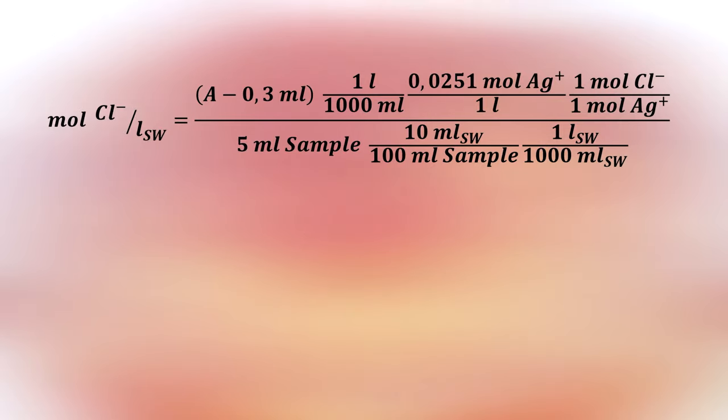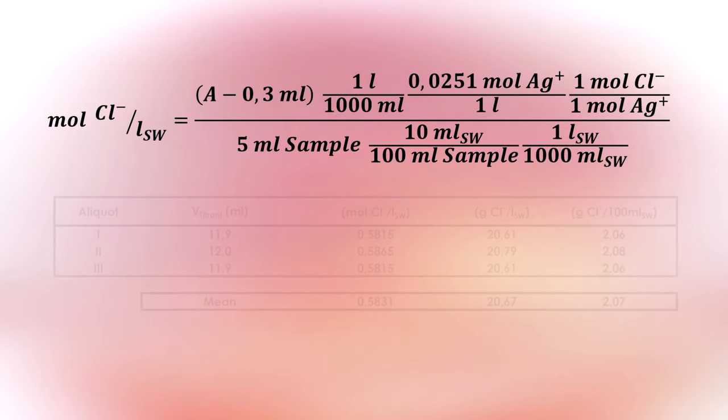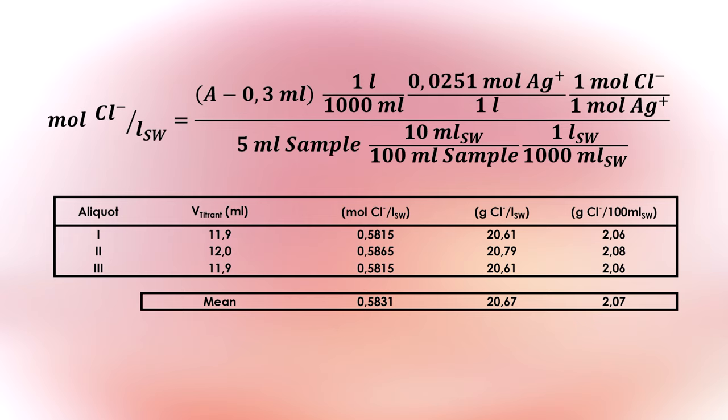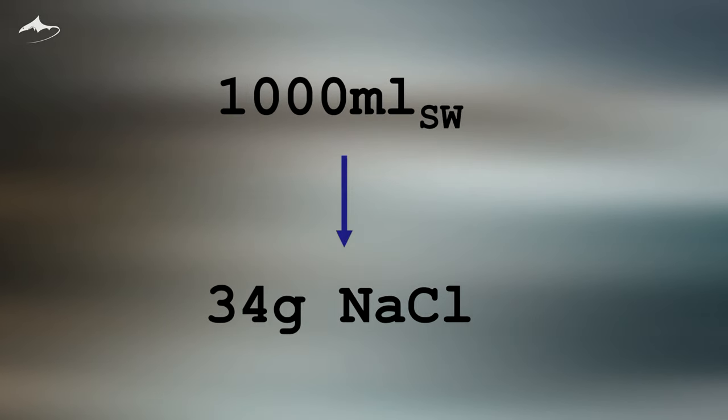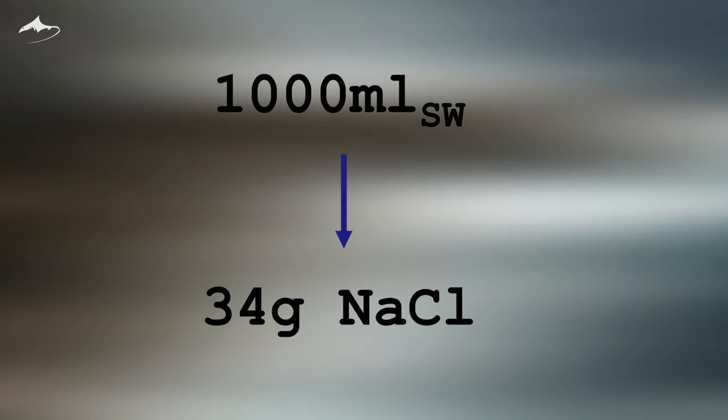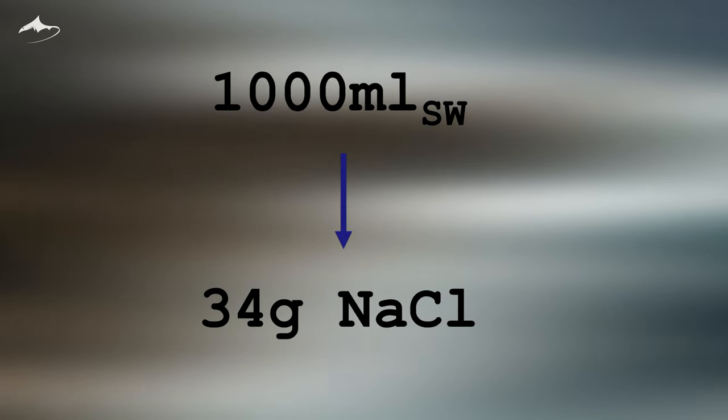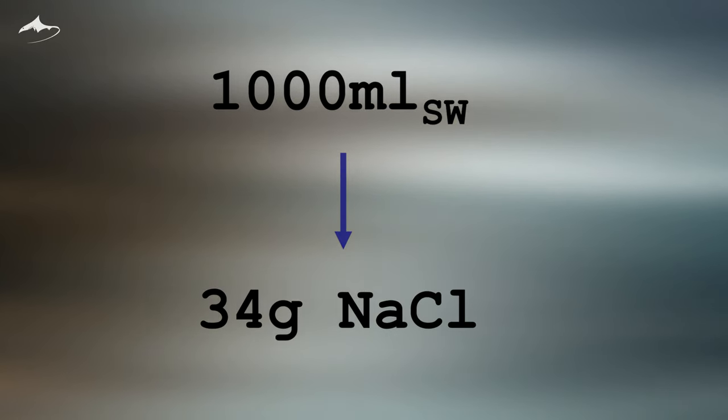Above you see the equation needed to calculate the molarity of chloride ion. Notice that 0.3 milliliters are subtracted from the variable A to apply the blank correction. On the denominator is the sample volume and its dilution factor. By substituting the variable A we get the molarity, but other types of concentration values can also be calculated. Here I show you its content in grams per liter and its percentage, which are more intuitive. If we assume all the chloride is in the form of its sodium salt, we can say that 1 liter of seawater has 34 grams of sodium chloride. This value is known as salinity and in my case it falls within the mean concentration of seawater around the world, which in general is accepted to be 35 grams per liter.